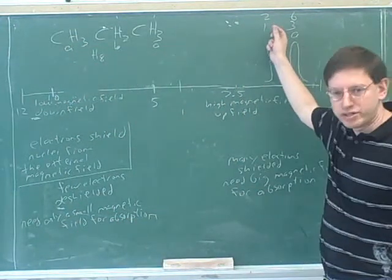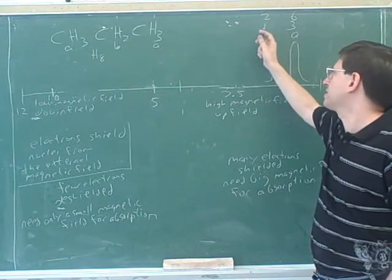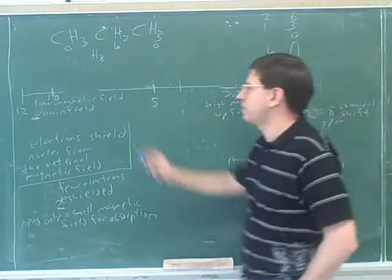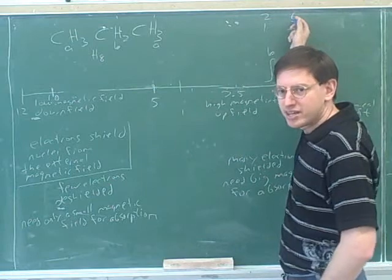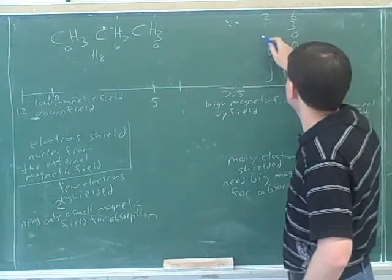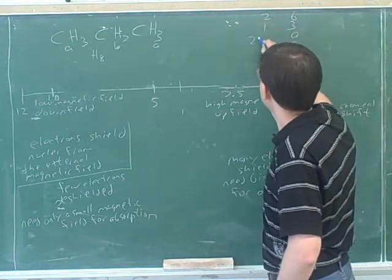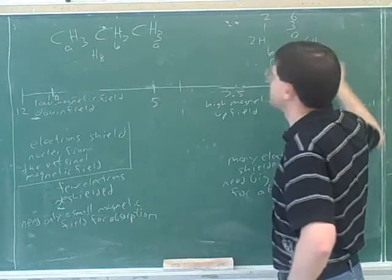So even if they tell you that the integration is 1 to 3, you can see well clearly it's not really 1 hydrogen and 3 hydrogens because that would only add up to 4. You would know that it must be 2 and 6. And sometimes in the printout they would simply write this as 2H and 6H.